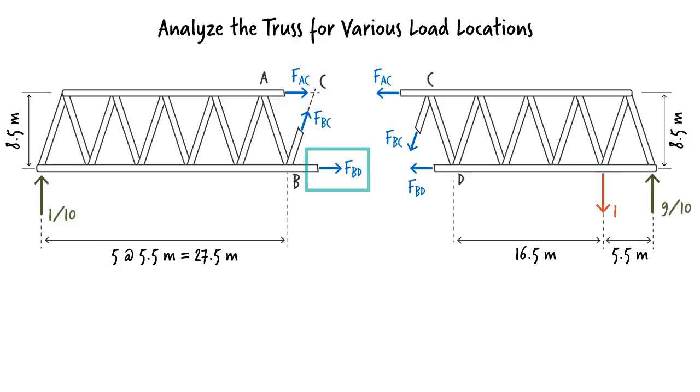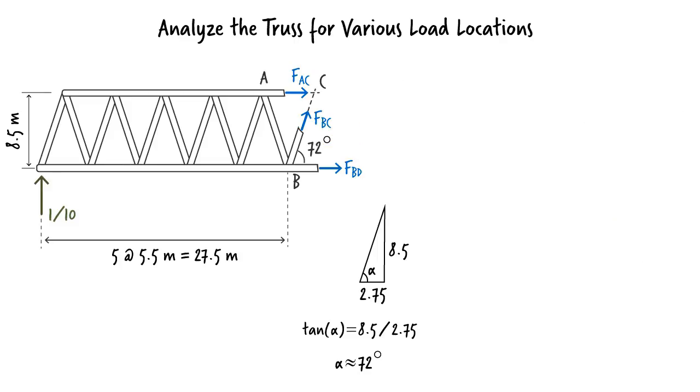But before we start writing the equilibrium equations, we need to determine the inclination angle of member BC. The angle is approximately 72 degrees. We need three equilibrium equations in order to determine the unknowns. Since FBC is the only unknown force with a component along the y-axis, if we sum the forces in the y-direction, we get...